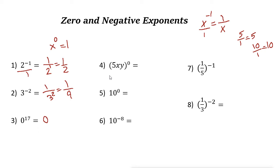0 to the power of anything is just 0. Any number to the power of 0, except 0 itself, is just 1. So 5xy to the power of 0 is just 1, and 10 to the power of 0 is 1. For 10 to the power of negative 8, to make the power positive, write it as 1 over 10 to the power of 8.